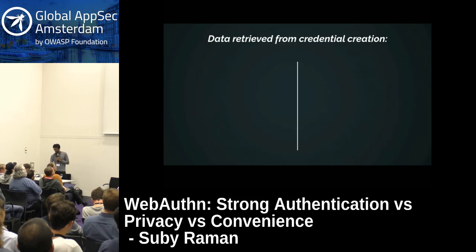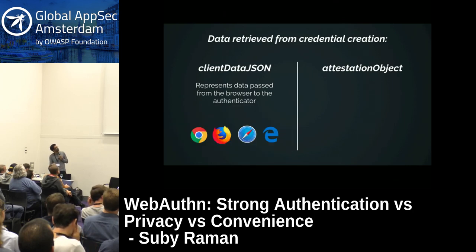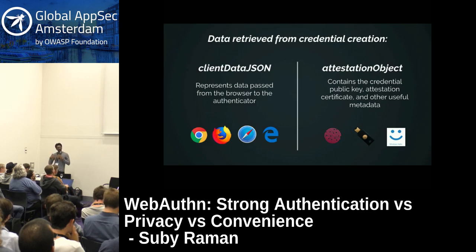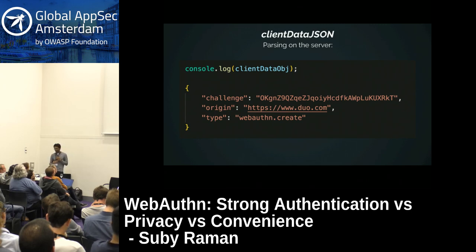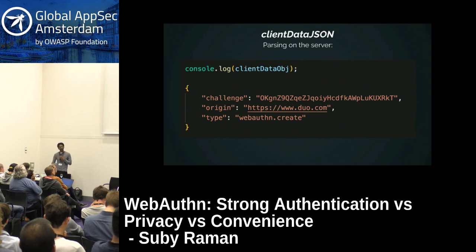The data retrieved from credential creation is broken into two parts: the client data JSON, which is data passed from the browser to the authenticator, and the attestation object, which is data generated by the authenticator containing the public key, attestation certificate, and other useful metadata. The client data JSON returns the challenge, the origin, and the type of operation — these need to be carefully verified on the server to ensure the validity of the registration ceremony.